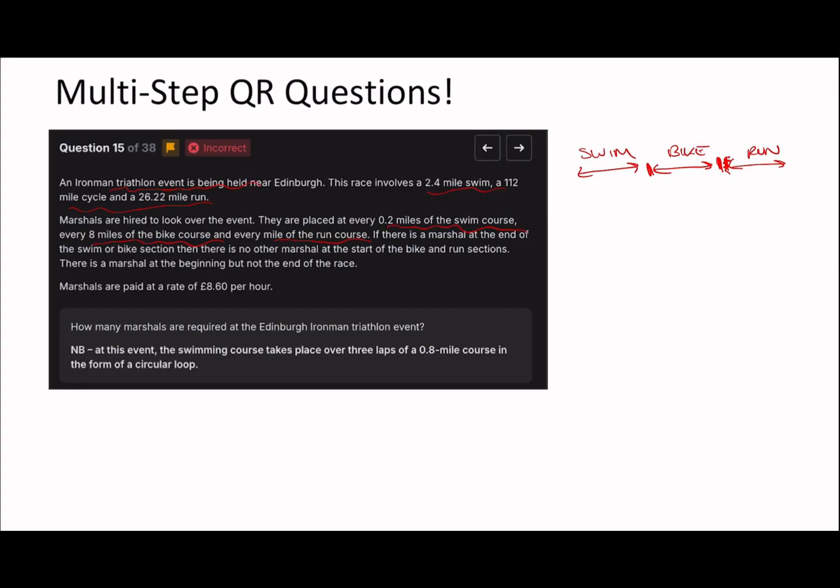Marshals are paid at a rate of 8.60 per hour, and the swimming course takes place over 3 laps of a 0.8 mile course in the form of a circular loop. So if we do it bit by bit, that means there is a marshal at 0, then at 0.2, 0.4, 0.6, and you don't need a marshal at 0.8 because 0.8 is going back to where the 0 is, and then that will repeat. So for the swimming section you only need 4 marshals.